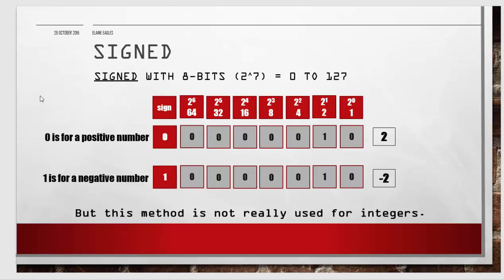Signed integers are different because they need to store the minus or plus, some indication of what the sign is. For example, you could use the last bit for zero or one to represent plus or minus. Zero for a positive number and one for a negative number, but this method isn't really used for integers.